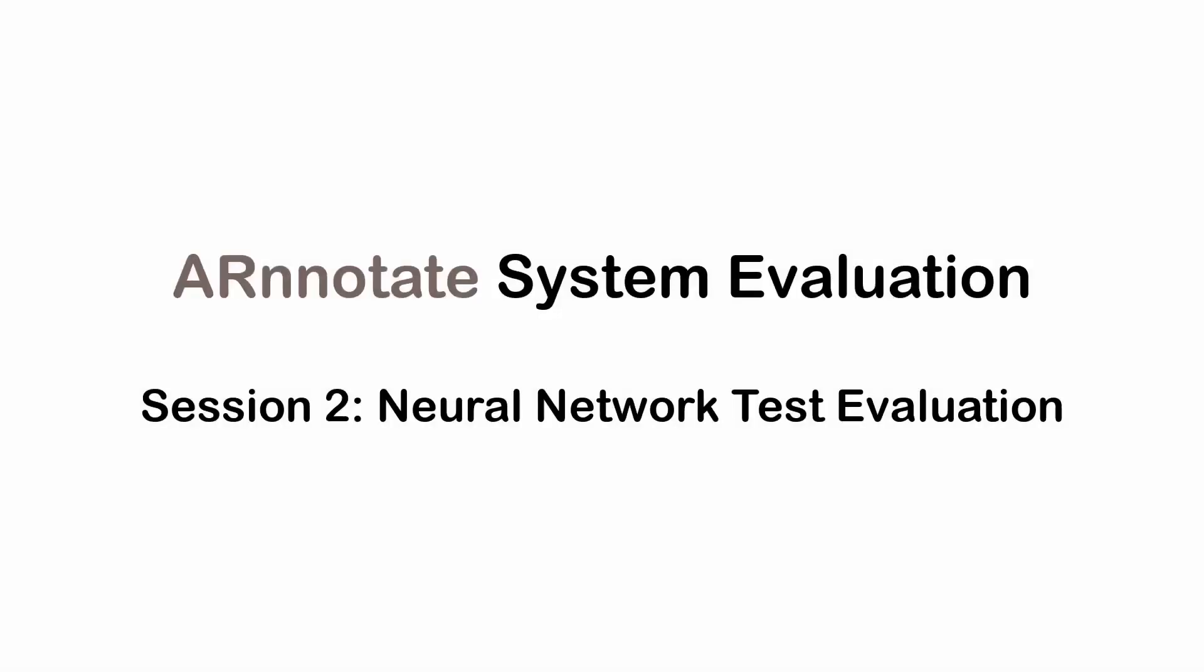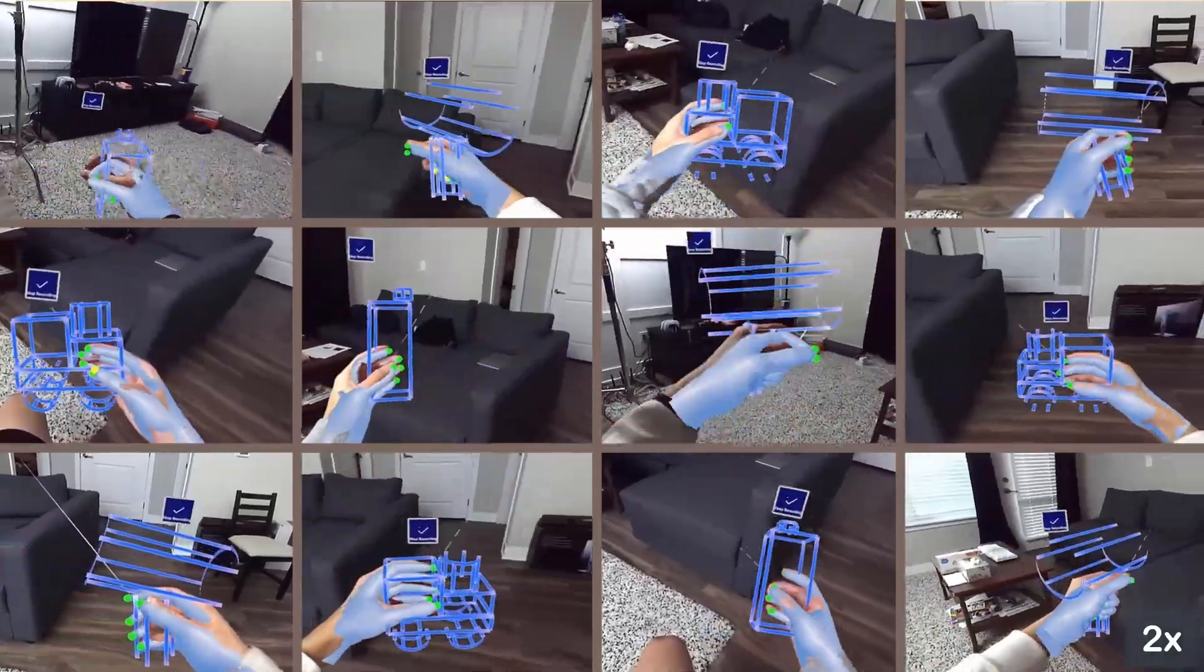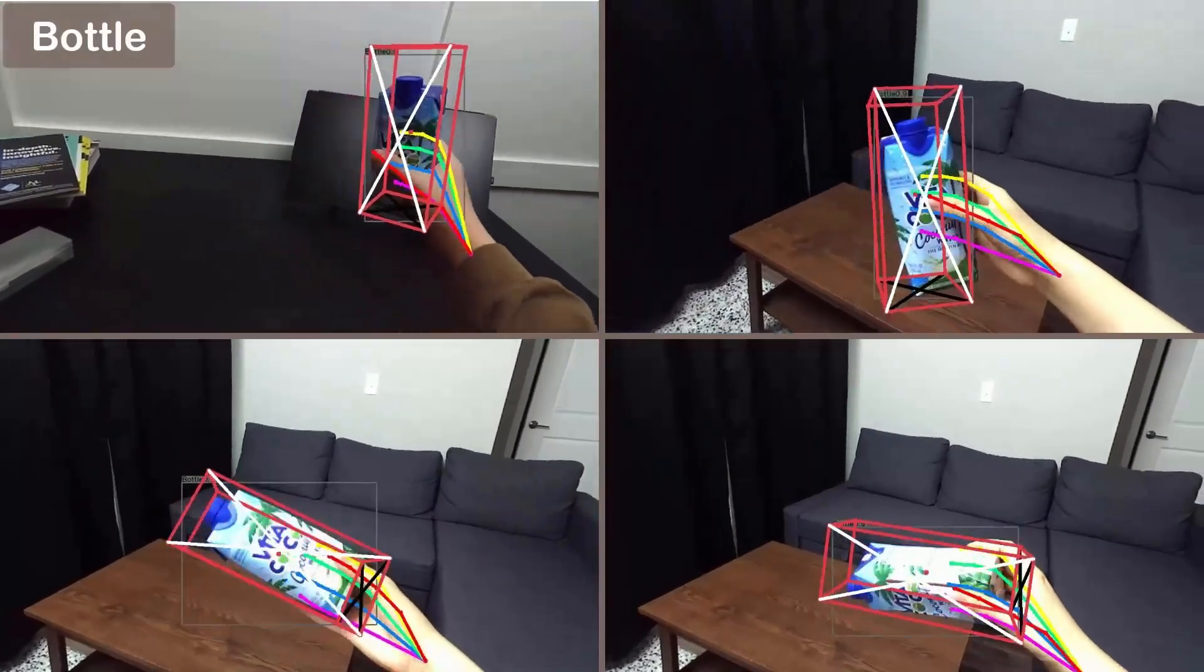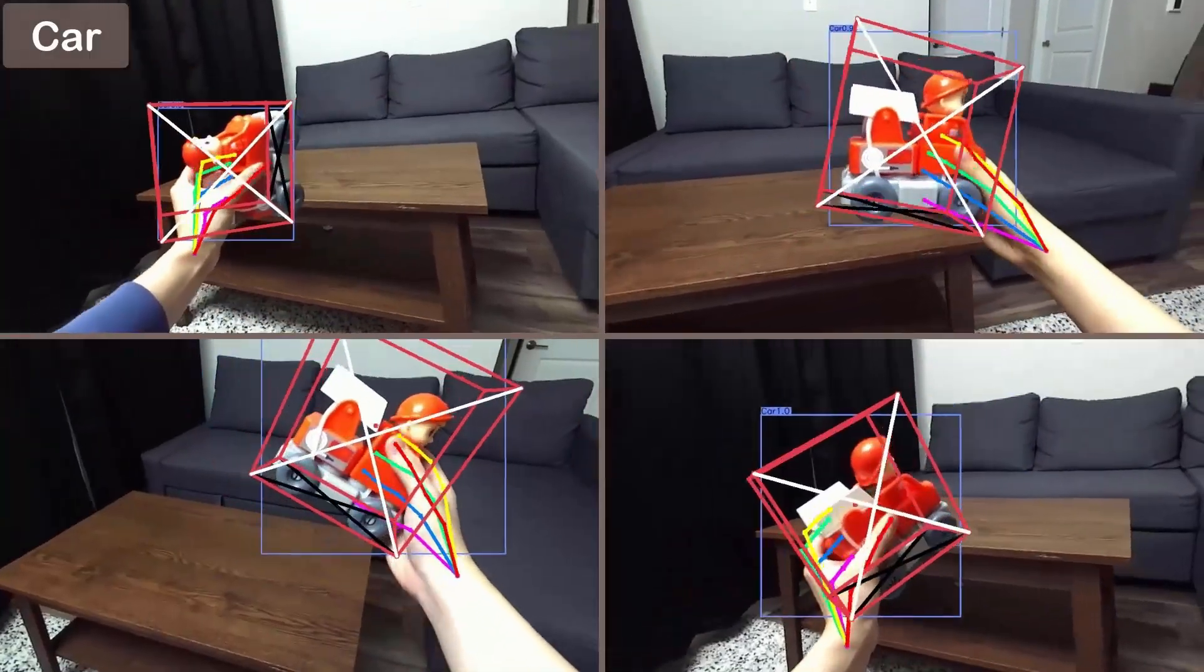In the second session, using the datasets collected by the users, we trained two networks for object and hand pose estimation respectively and investigated their performance. Here, we showcased some test results of the neural networks trained with the user-collected datasets.